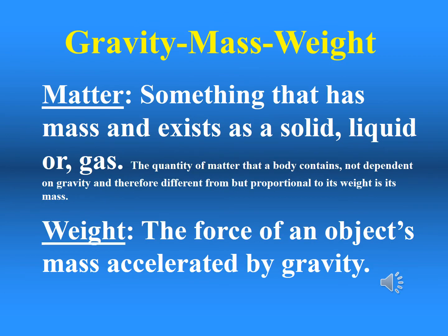In physics, mass is the property of matter that measures its resistance to acceleration. Roughly, the mass of an object is a measure of the number of atoms it contains. The basic unit of measurement for mass is the kilogram. The weight of an object is the force of gravity on the object, defined as mass times the acceleration of gravity. Since weight is a force, its SI unit is the Newton. Density is mass divided by volume.